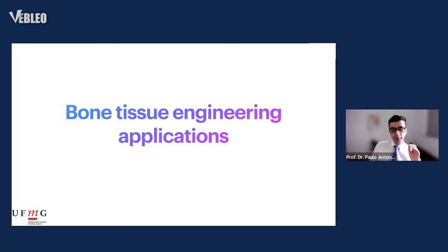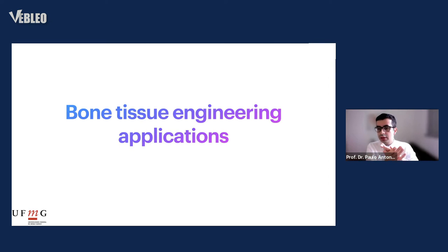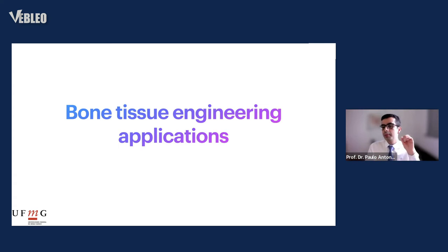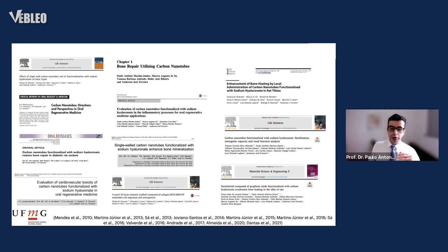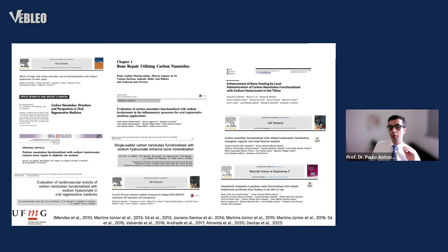When we think about bone tissue engineering applications, we see that carbon nanotubes and graphene can both act as scaffolds because osteoblast cells need a scaffold to adhere, spread, proliferate, and also use this scaffold or matrix to secrete bone matrix and mineralize it. I will now show some of our group's publications related to the use of carbon nanotubes or graphene oxide, associated with hyaluronic acid, to enhance bone repair or regeneration.